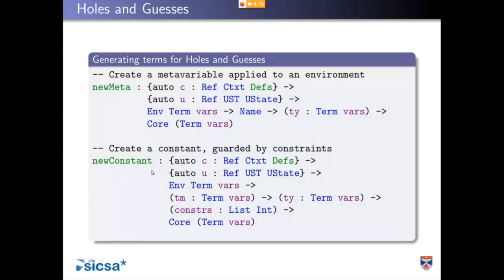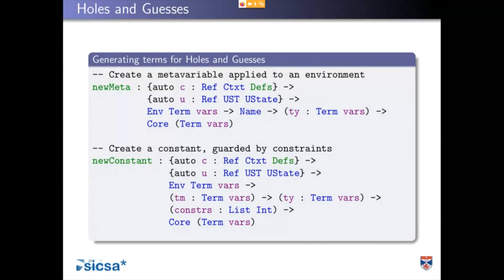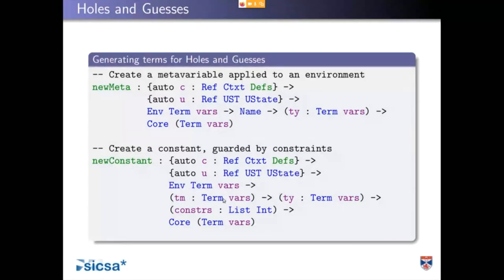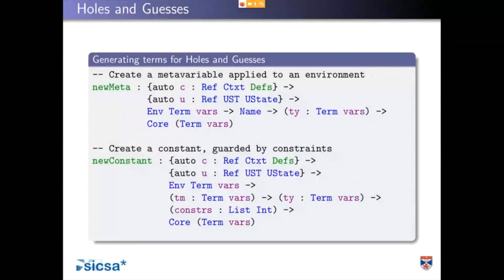When we apply unification but get some constraints back, we have to say we can't use this term yet — we can only use it once the constraints are solved. So we postpone the result of that bit of elaboration, create a new constant, and this creates a guess definition. The guess is constructed from this term in this environment with the given type, and it says: once these constraints are satisfied, you'll be able to use this constant with this value. But until then it can't have any computational force because it might be that the constraints turn out to be unsatisfiable.